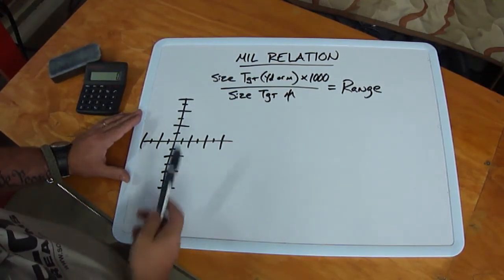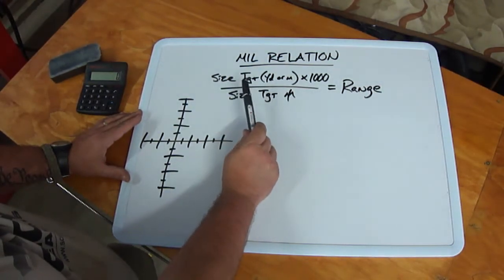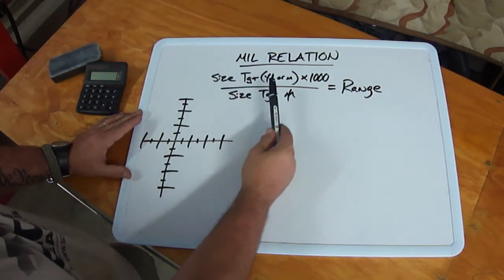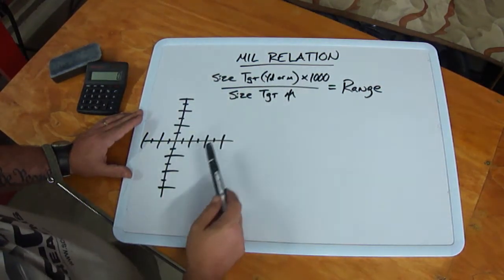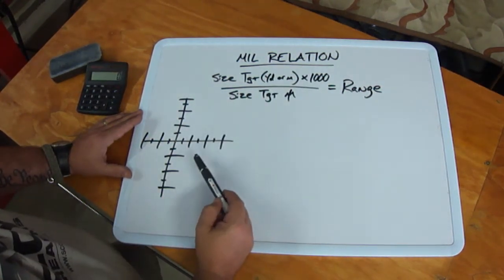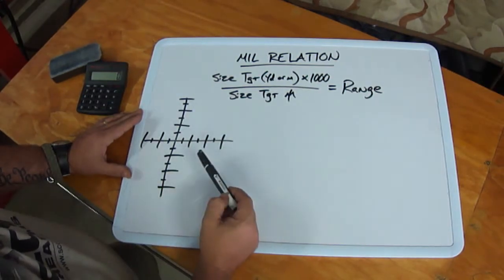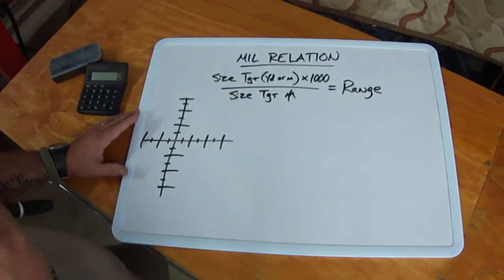The way it breaks down is this. You're going to take the size of your target if you know it or estimate it in either yards or meters, multiply that by a thousand and then divide it by the size of the target in mils as you see it in your reticle. That's going to equal your range to the target.